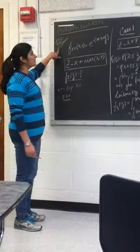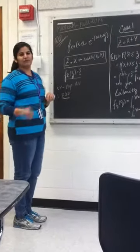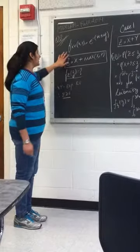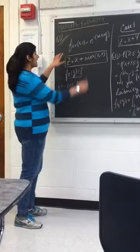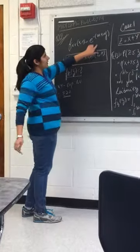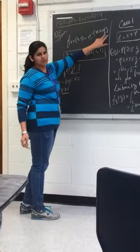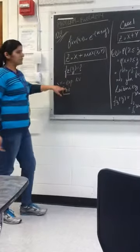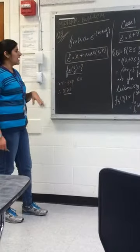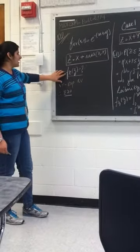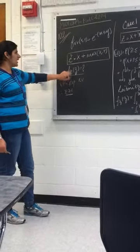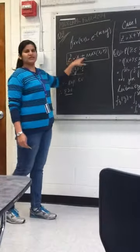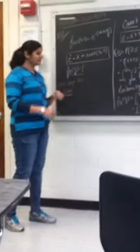Today we will solve question number 2 of midterm for 2014. It is given that f(x,y) is e raised to the power minus x plus y, where x and y are given to be exponential random variables. We have to find f_Z of z, where Z is given to be x plus maximum of x or y.